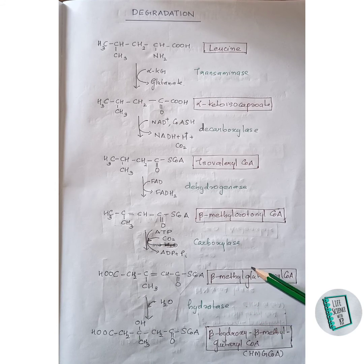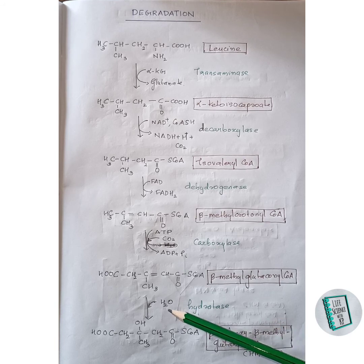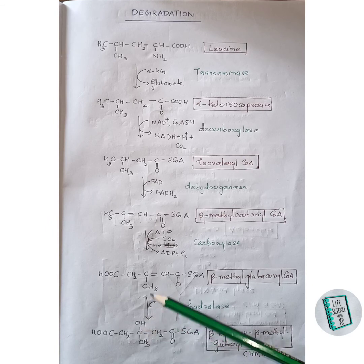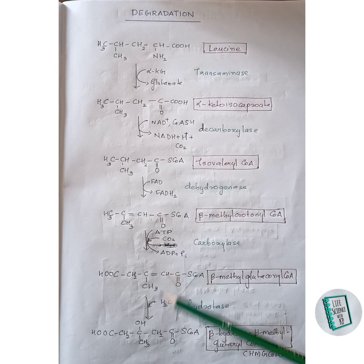Beta-methylglutaconyl-CoA undergoes hydration in the presence of hydratase enzyme: the OH group of a water molecule is added to one carbon, and the hydrogen of water attaches to the adjacent CH group forming CH2, producing beta-hydroxy-beta-methylglutaryl-CoA, also known as HMG-CoA.